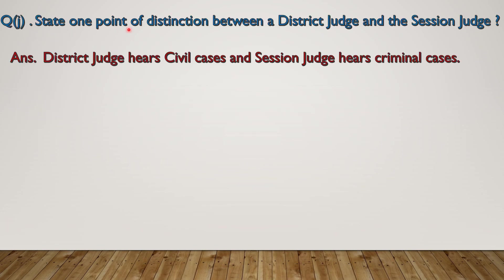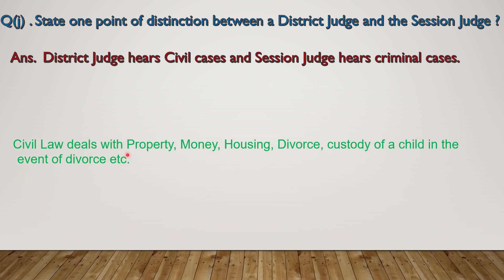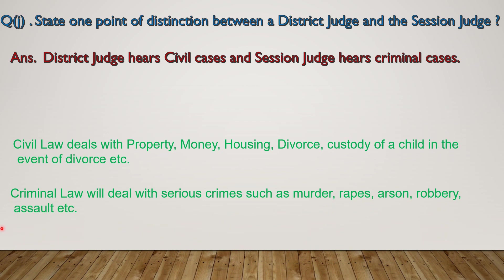Now state one point of distinction between a District Judge and a Session Judge. A District Judge hears civil cases and a Session Judge hears criminal cases. Civil law deals with property, money, housing, divorce, custody of a child in the event of divorce, etc. Criminal law deals with serious crimes such as murder, rape, arson, robbery, assault, etc.